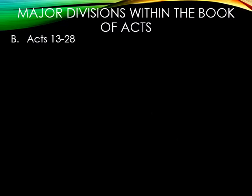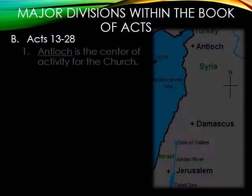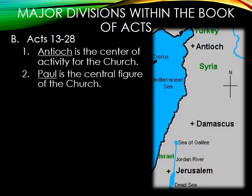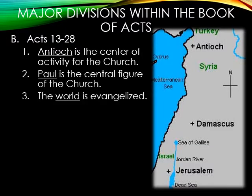The second major division is Acts 13–28. In contrast to Jerusalem being the center of activity in the first division, Antioch is the center of church activity in this last half. This is a very Gentile area — around the area of modern-day Turkey today. Number two, Paul is now the central figure of the church. Peter primarily focused on the Jews, while Paul felt that God had called him to specifically evangelize the Gentiles. Number three, the world is evangelized, showing the disciples fulfilled Jesus' wishes to spread the Gospel from Jerusalem to Judea, to Samaria, and then to all parts of the earth.